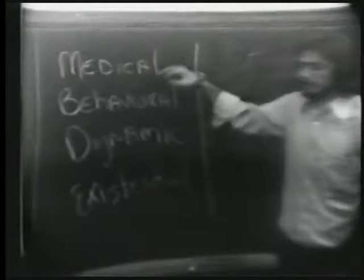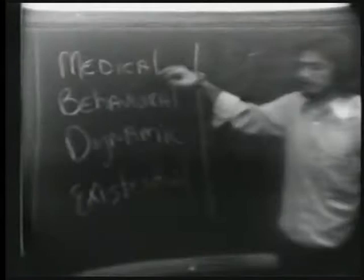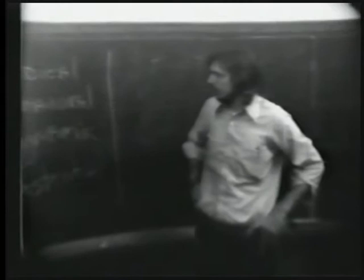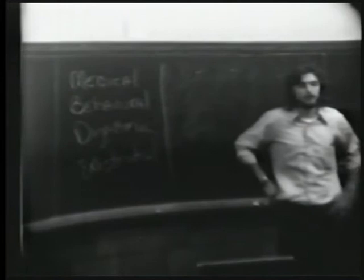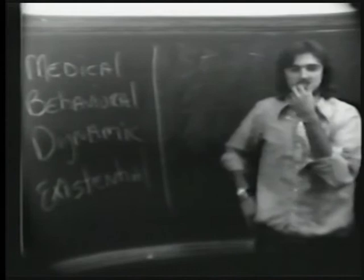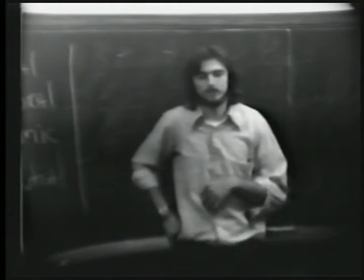What you'll find here is that there's usually a lot of controversy between the medical model and the behavioral model. The medical model is kind of a disease orientation — the idea that a person is schizophrenic or neurotic because of some kind of disease, something inside the body that either has to be cut out, taken care of by drugs, or through some medical process.